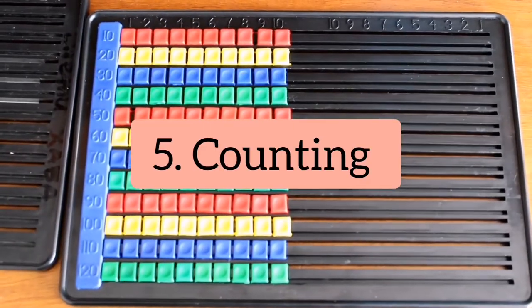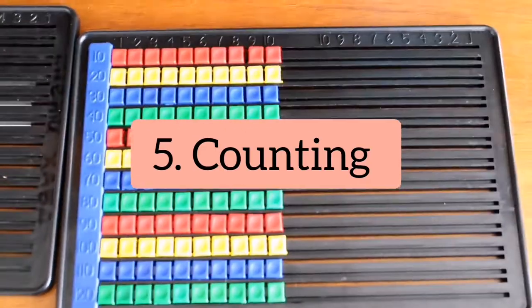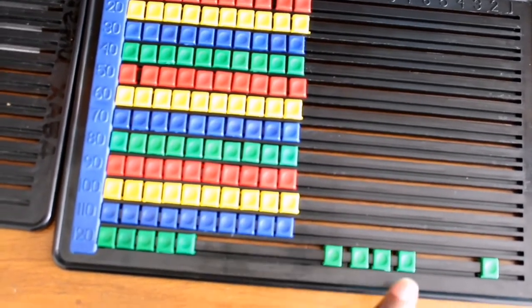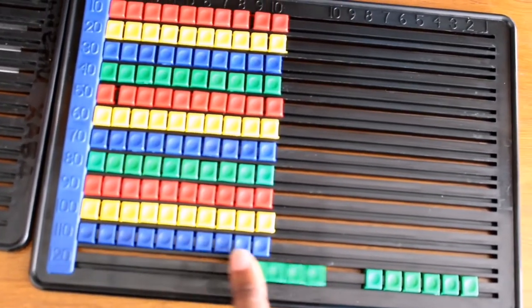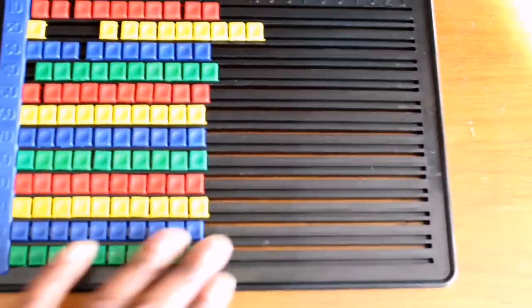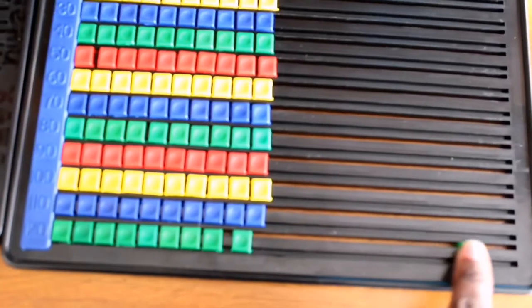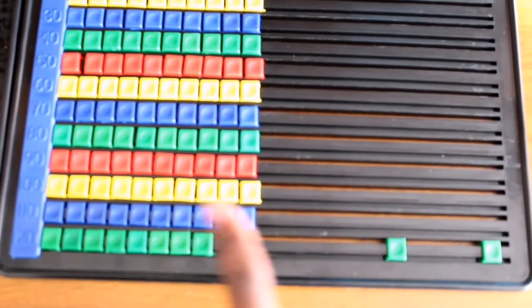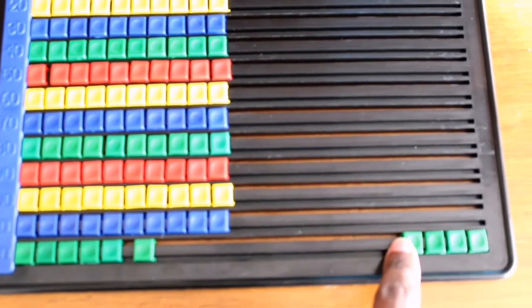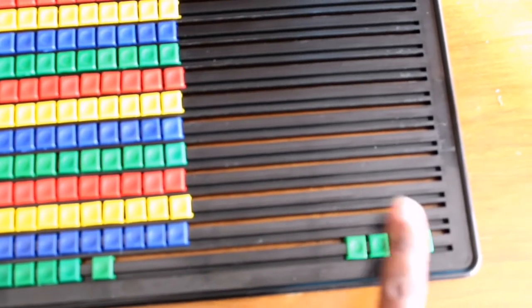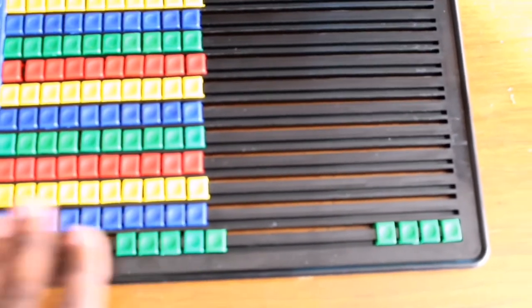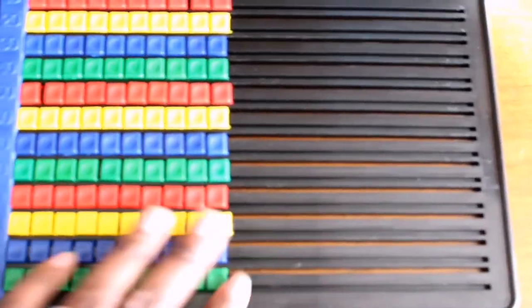You can count from one up to 120 for this one, so the child will count one, two, three, four, five, six, all the way up to 120. Counting from one to 120 will help the child understand the concept of counting. If I say number four, which means I have four objects or four beads, and if I say six and so on, so they will understand the concept of counting.